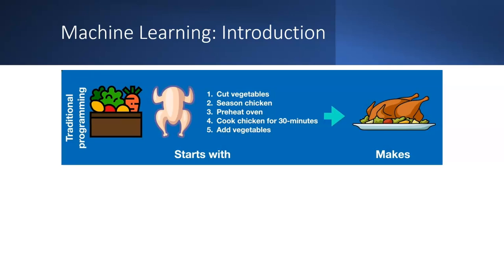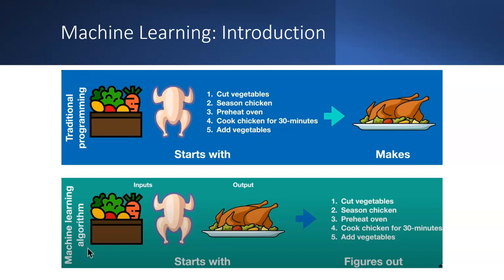In machine learning, you have inputs and outputs and then figure out the rules — it works like a black box. The key difference from traditional programming is that in traditional programming you define the rules and the machine follows them, whereas in machine learning you provide input and output and the system figures out the rules on its own.